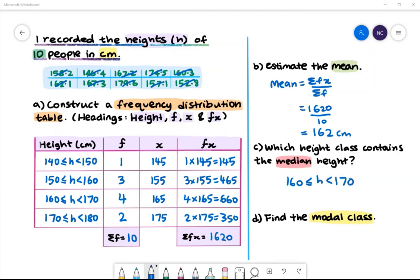Part D: Find the modal class. The mode is the most common height. The most common height range is between 160 and 170.